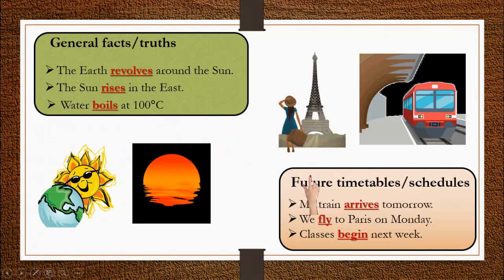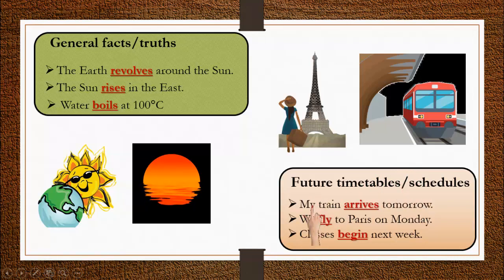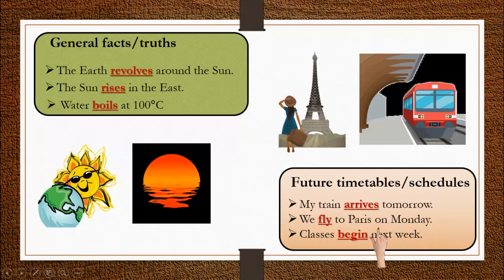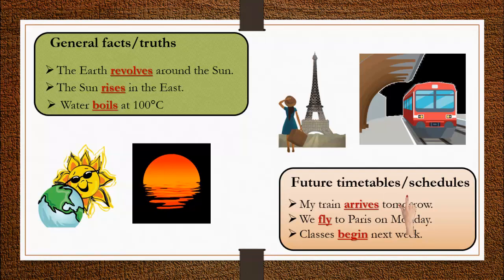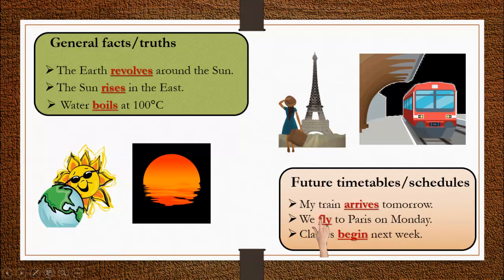The fourth use is for future timetables and schedules. For example: 'My train arrives tomorrow.' 'We fly to Paris on Monday.' 'Classes begin next week.' For scheduled future events, we use simple present tense.